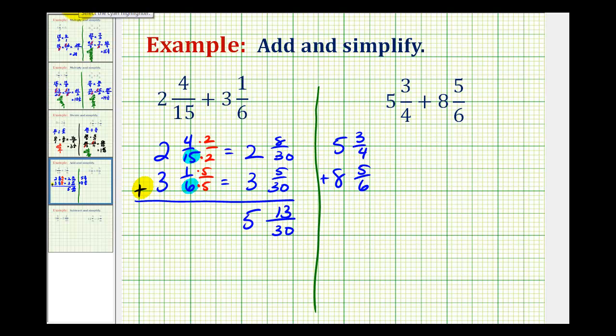The next step is to determine the least common denominator using four and six. Well, we could always multiply four and six to get twenty-four and use twenty-four as a common denominator. But the least common denominator would actually be twelve.